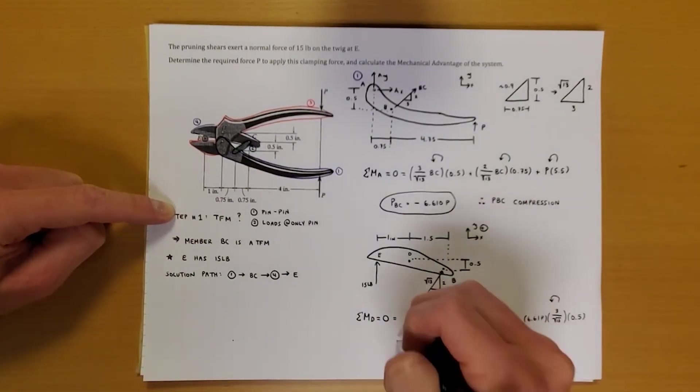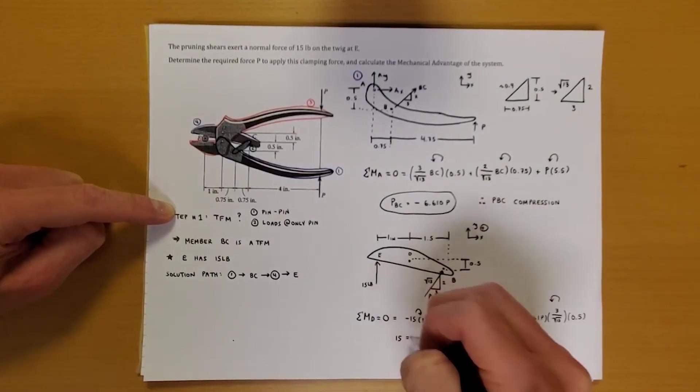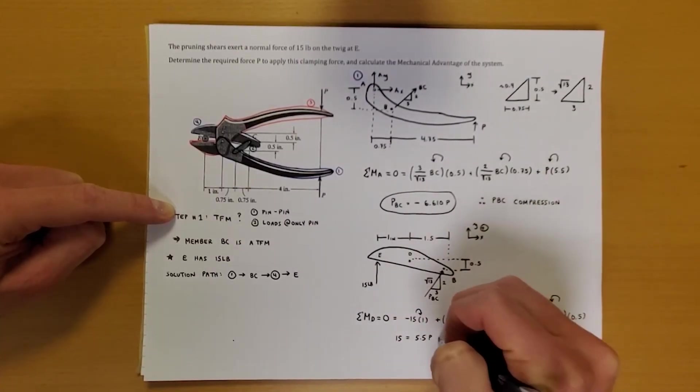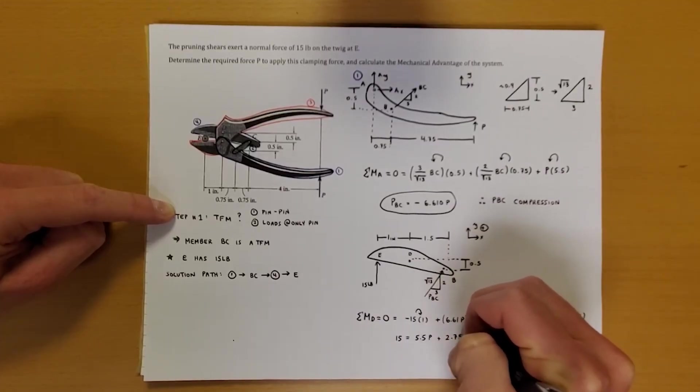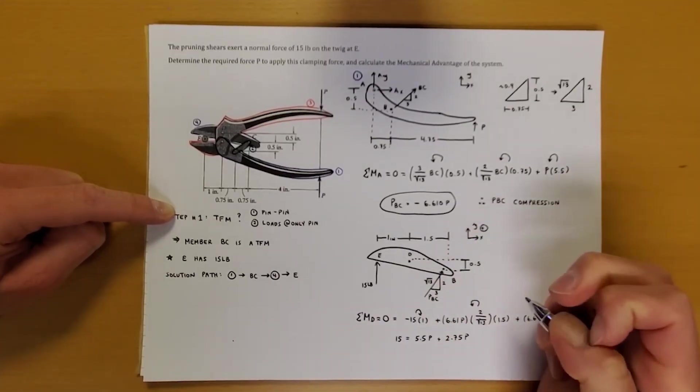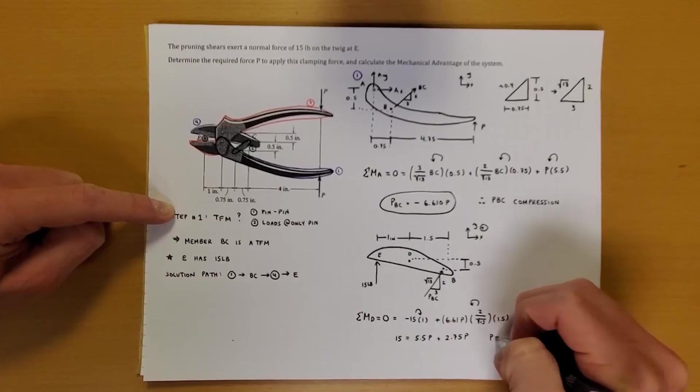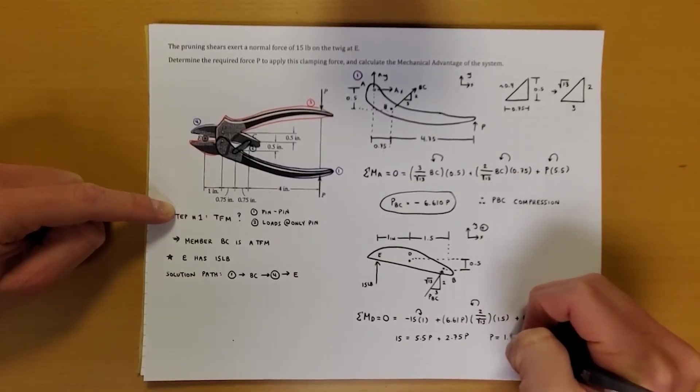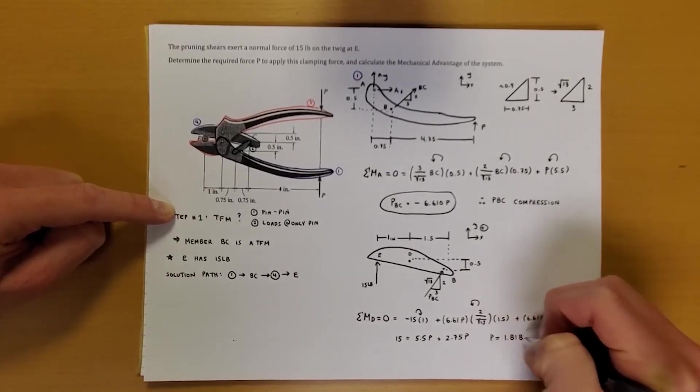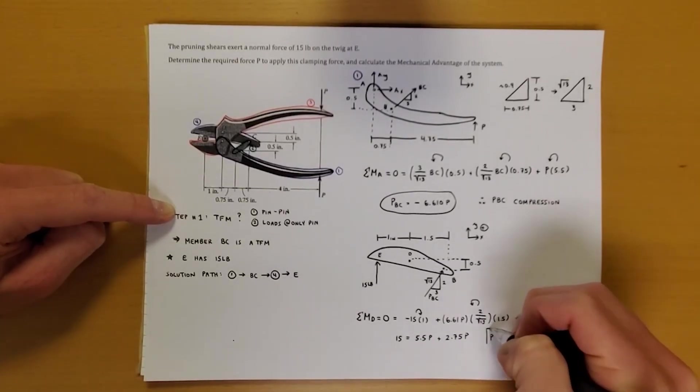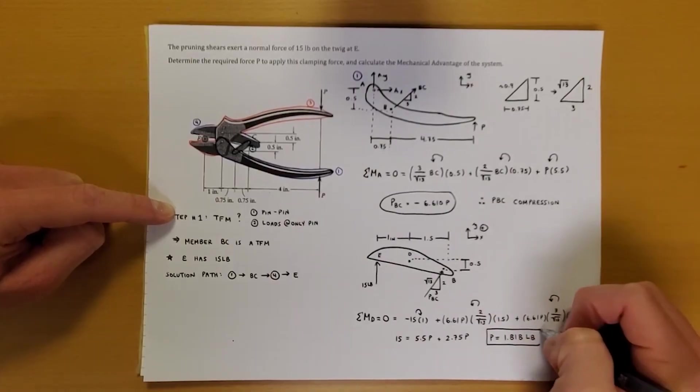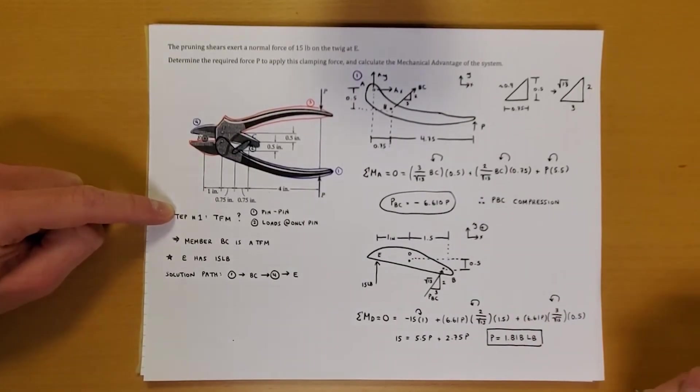Essentially, what this tells us is that 15 is equal to 5.5P plus 2.75P. And that P is equal to 1.818 pounds. That is our final answer.